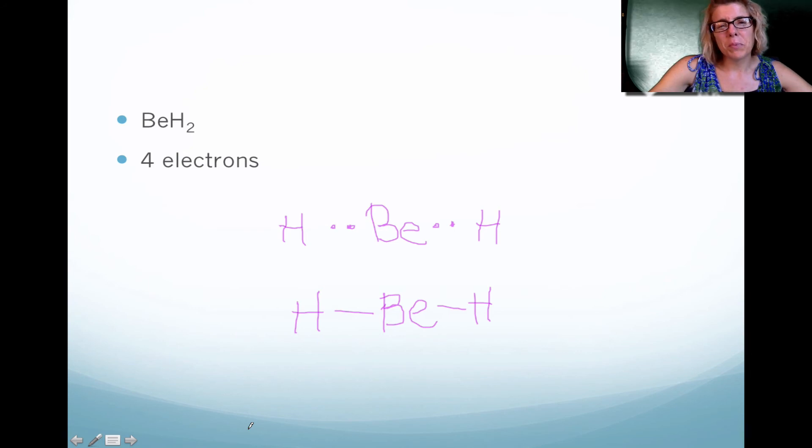Now, the interesting thing with beryllium is it doesn't want an octet necessarily, and I'll talk more about that in class. So if you're scratching your head, why aren't there eight valence electrons around beryllium? We'll talk more about exceptions to the rule.